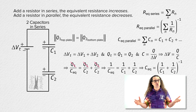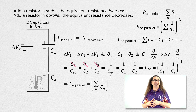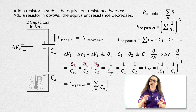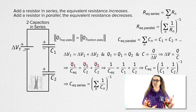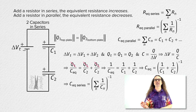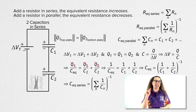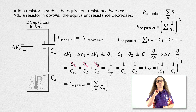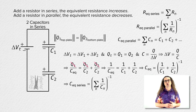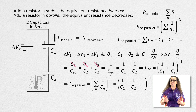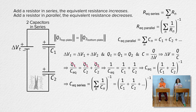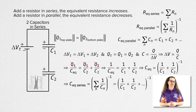A more general equation for the equivalent capacitance of n capacitors in series equals the inverse of the sum of the inverses of the capacitance of n number of capacitors. You just add up the inverses of the capacitances of all the series capacitors and take the inverse of that.